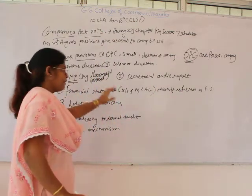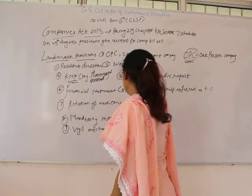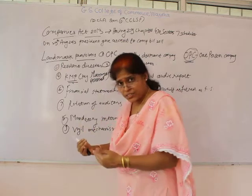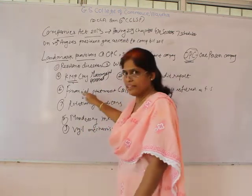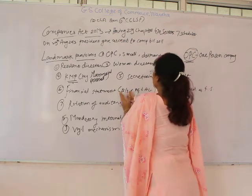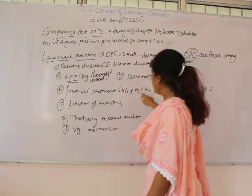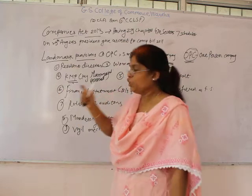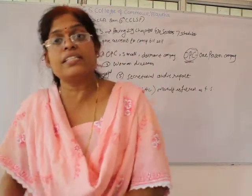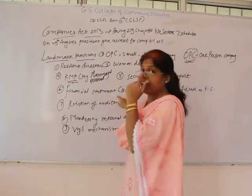Regarding financial statements: earlier, companies prepared a balance sheet and profit and loss account. The Companies Act 2013 introduced a collective term — these two financial documents are now collectively known as a financial statement. Every company must prepare their balance sheet and profit and loss account, and this balance sheet and profit and loss account is known as the financial statement of the company.